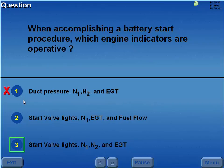The N1, N2 and EGT indicators provide their own power for operation — self-generating — while the start valves are battery powered. Therefore these indicators will be available during a battery start.